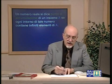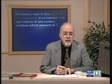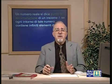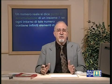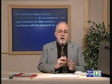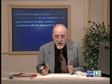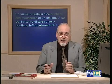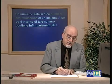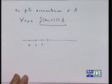È abbastanza facile fare esempi di insiemi privi di punti di accumulazione. Un insieme finito certamente non ha punti di accumulazione. Ma anche un insieme infinito come l'insieme N dei naturali — 0, 1, 2, 3, 4 — non ha punti di accumulazione, perché se prendo un numero reale qualunque, sia che appartenga ad N che non, si vede facilmente che esiste un intorno abbastanza piccolo in cui non è contenuto alcun numero naturale o al più ce n'è uno solo.